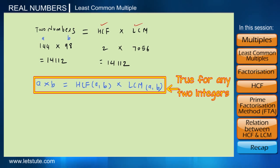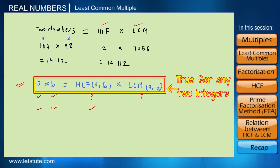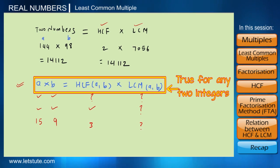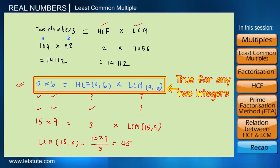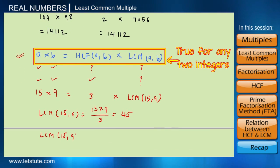Now we can use this relation to solve various types of problems. For example, if the two numbers are 15 and 9, and the HCF of 15 and 9 is given as 3, we can find the LCM. Using the relation: 15 × 9 = 3 × LCM(15, 9), which gives LCM(15, 9) = 135 ÷ 3 = 45.